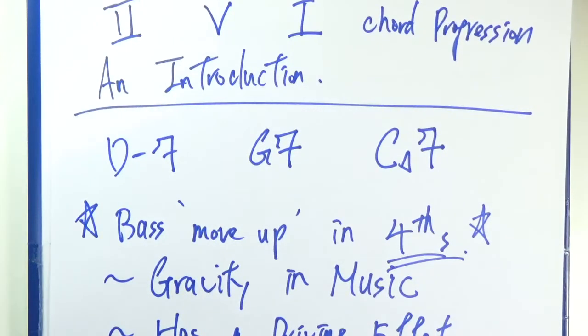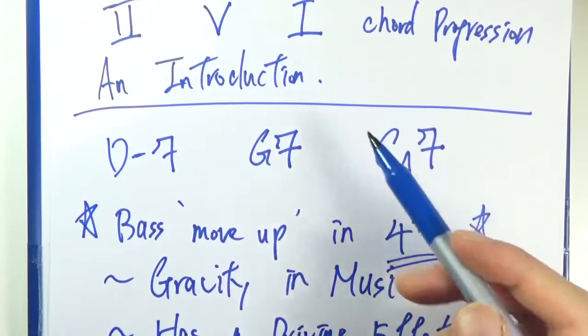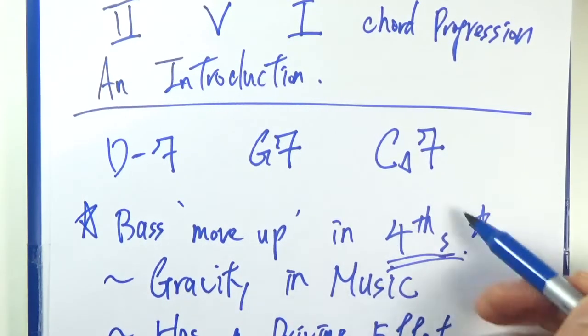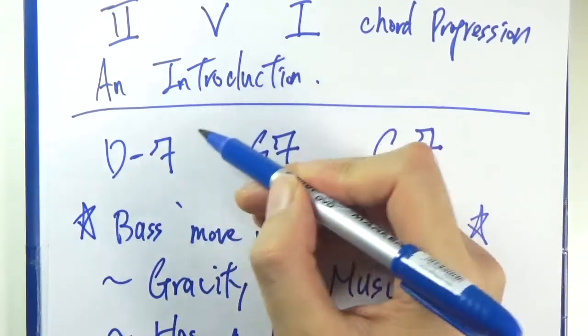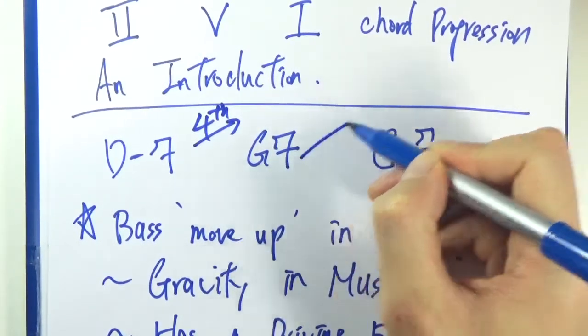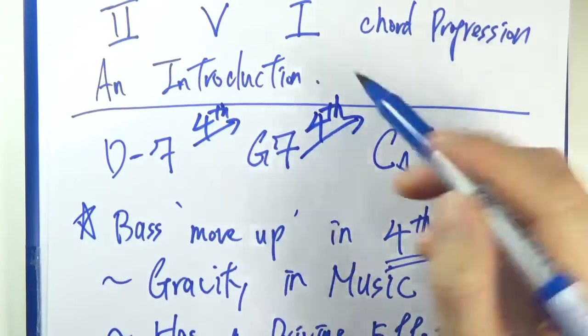There's one very important bass movement that we want to get ourselves acquainted with, which is a bass movement that moves up in fourths. For example, the reason that 2-5-1 sounds so natural is because of this exact bass movement, moving in fours. And check this out: D, E, F, G - that's a bass movement in fours, and another fourth here when you go from G to C.